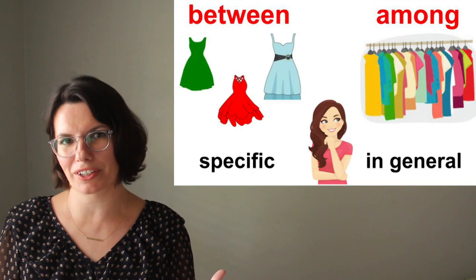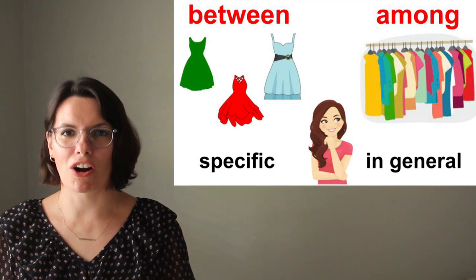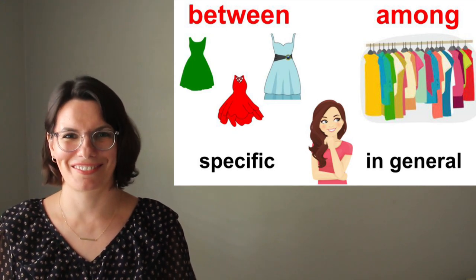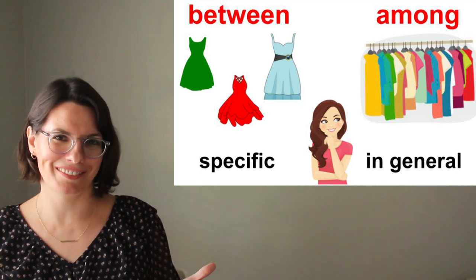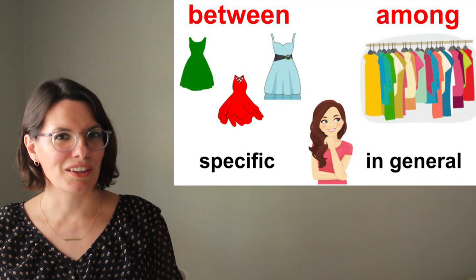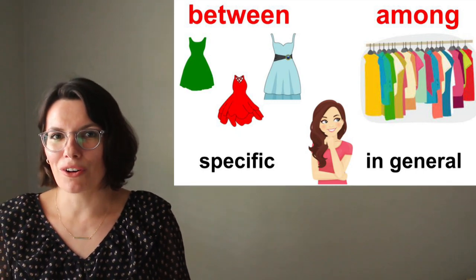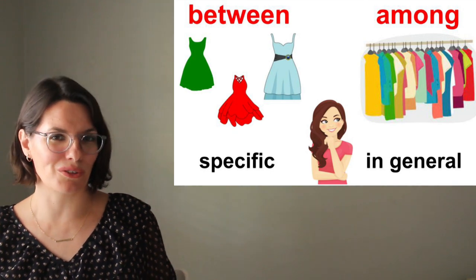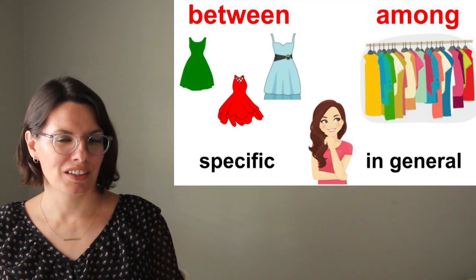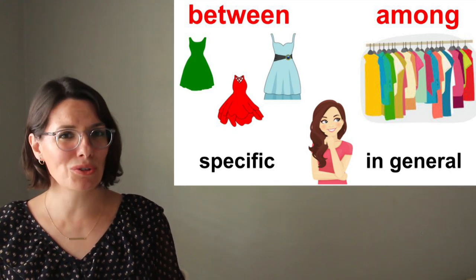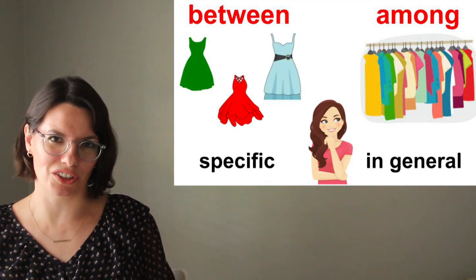She is going to a party today. She has a lot of clothes. Among all the clothes, there are a few dresses. But she really likes these three dresses: the red dress, the green dress, and the blue dress. So now she needs to choose between these three dresses — between the red dress, the green dress, and the blue dress. What does she need to do? Does she need to choose between these three dresses?